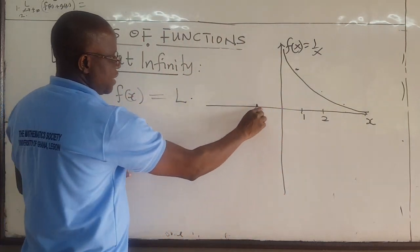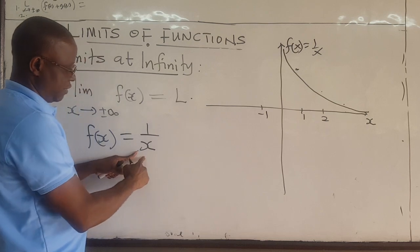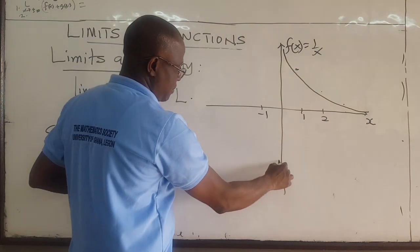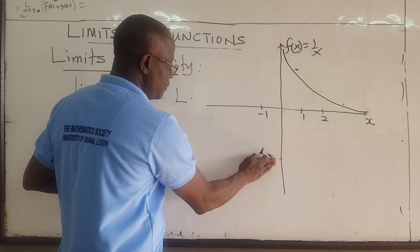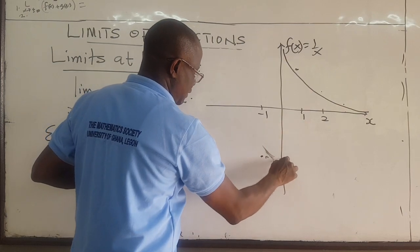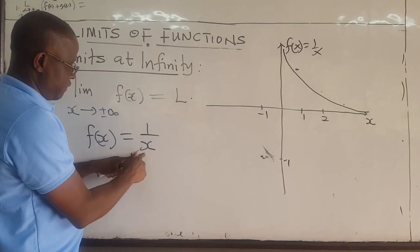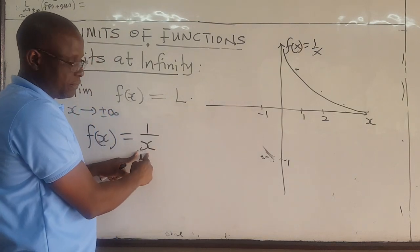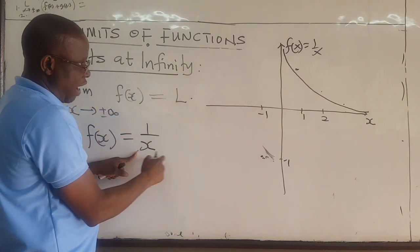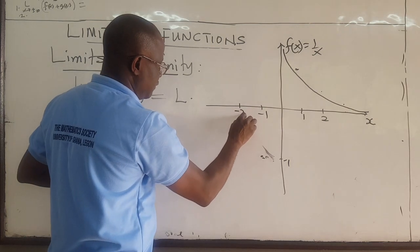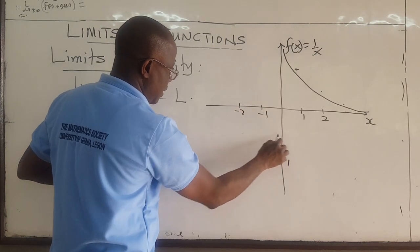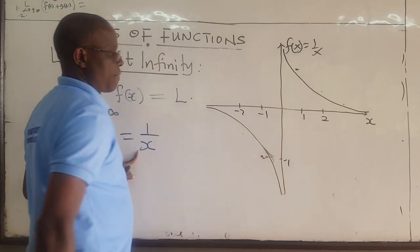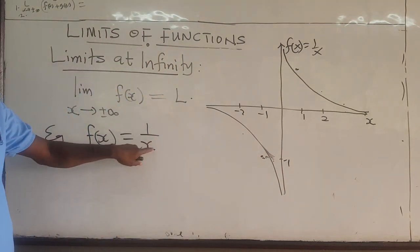Same way, if x is negative 1, you're going to have 1 over negative 1, which is negative 1. You're going to be somewhere there. If x is negative 2, this would be negative 1 over 2, that's negative half. So at negative 2, you are somewhere there. So the function is going to do something like this. That is the function 1 over x, and our 0 is here.